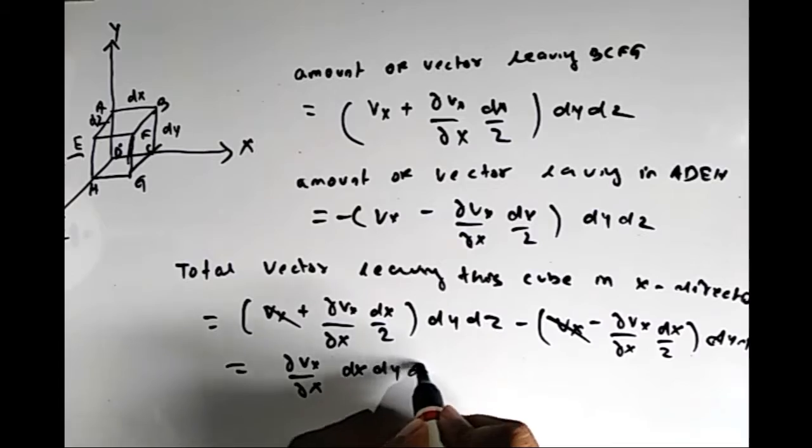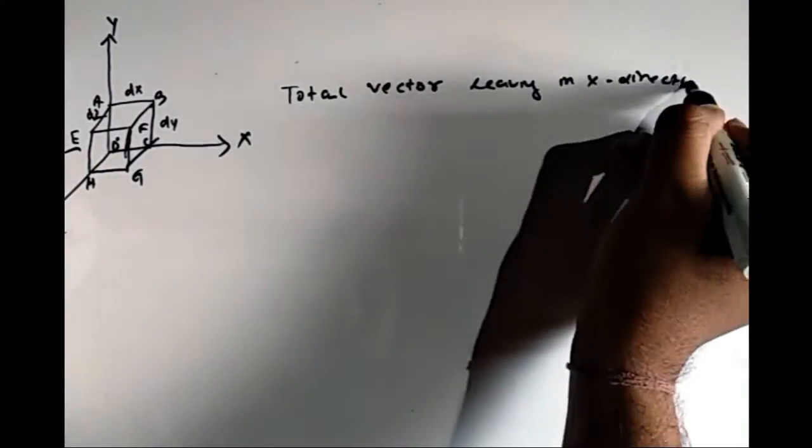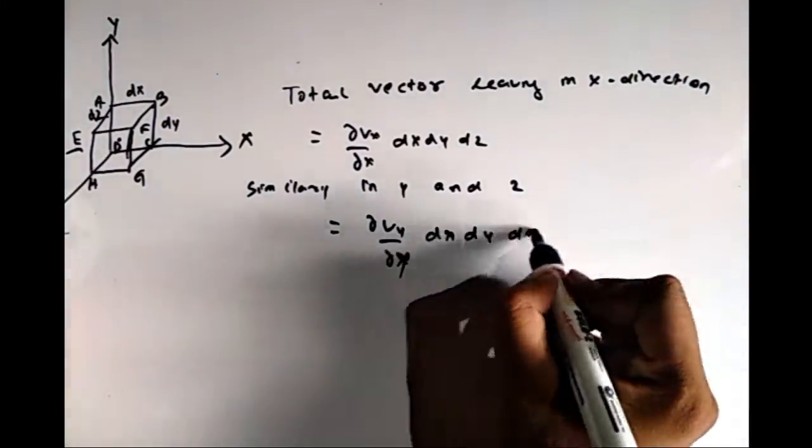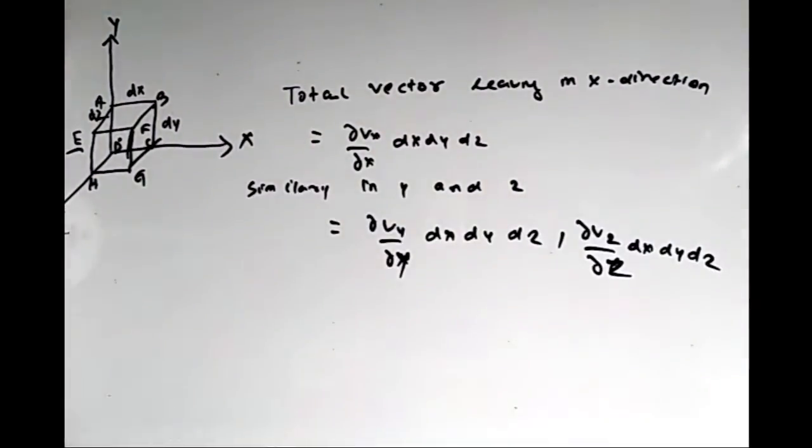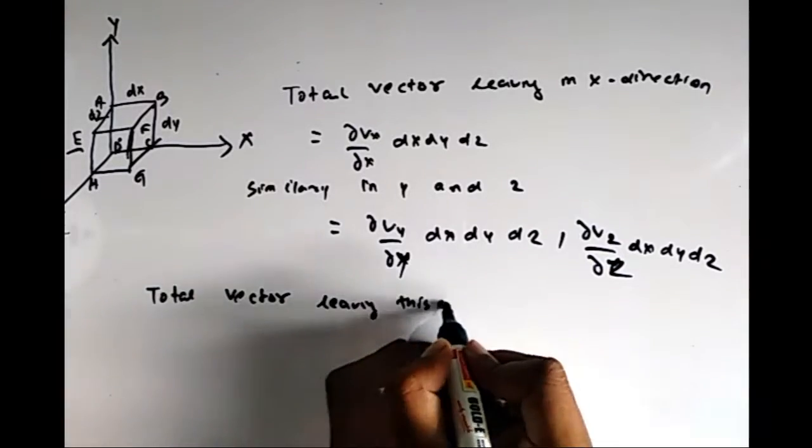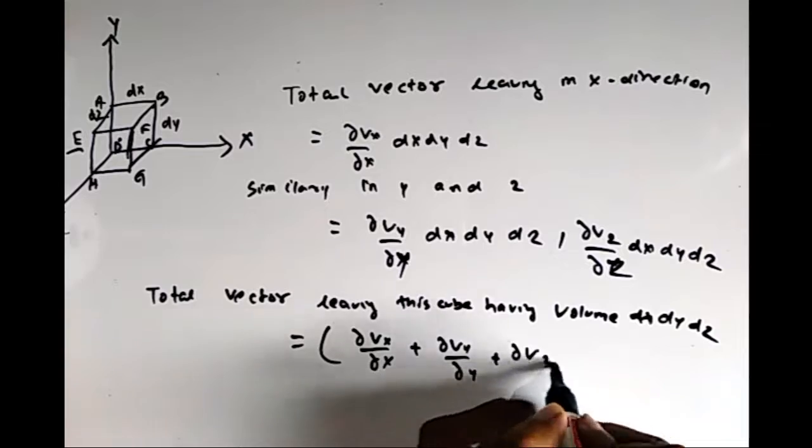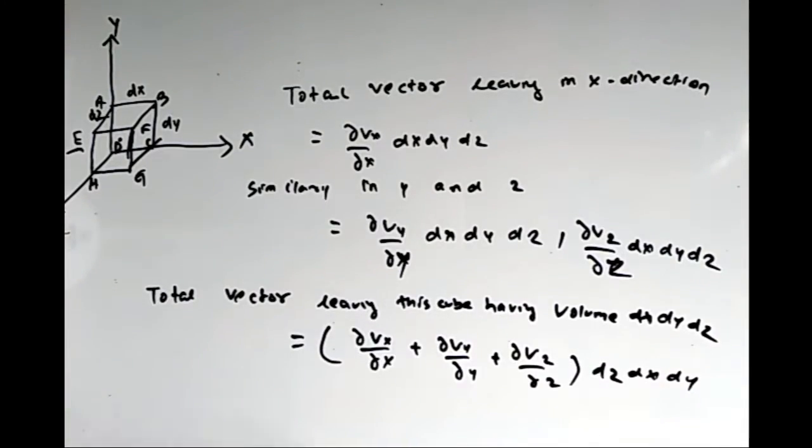Similarly, the amount of vector leaving in the y and z directions can be written as del Vy by del y dx dy dz and del Vz by del z dx dy dz. The total vector leaving this cube is del Vx by del x plus del Vy by del y plus del Vz by del z times dx dy dz.